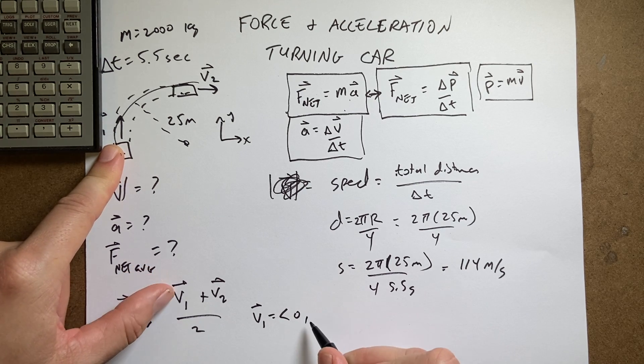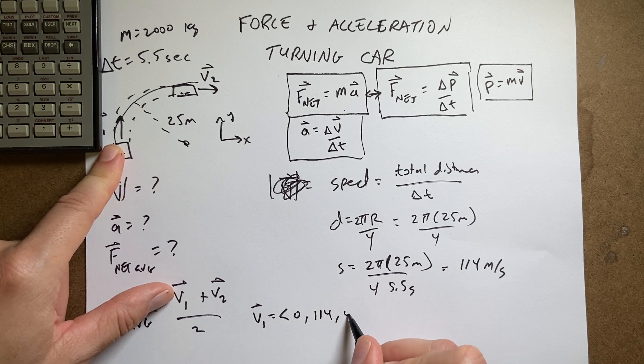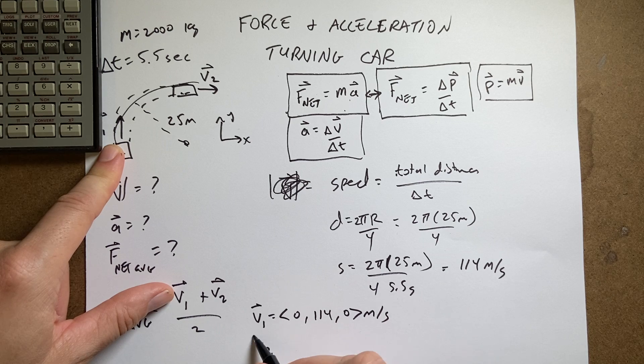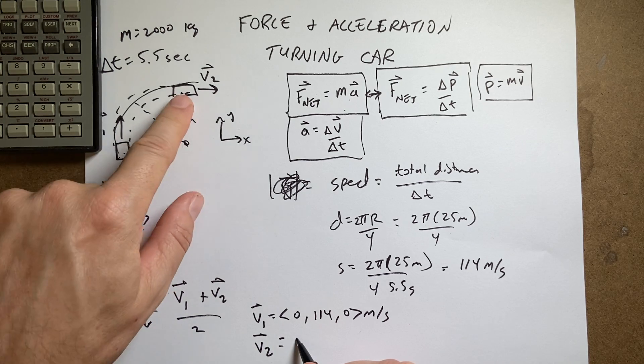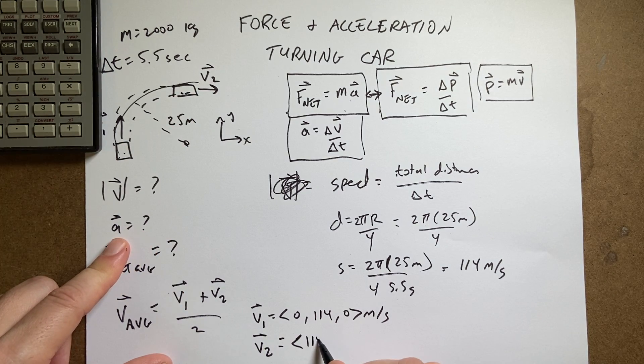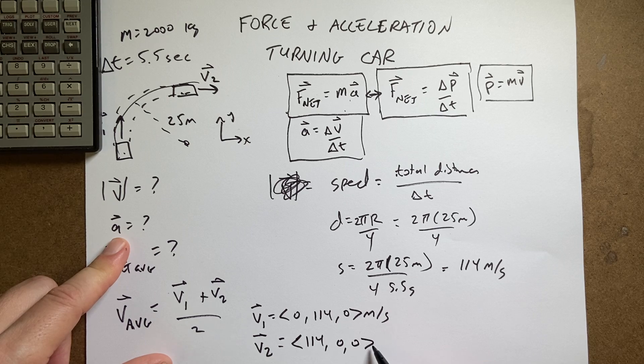So I'm going to write this as 0, 114, 0 meters per second. V2 is going to be in the X direction. So it's going to be 114, 0, 0 meters per second.